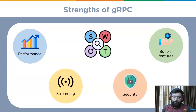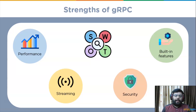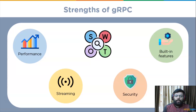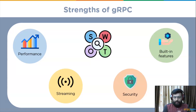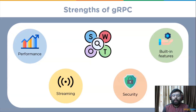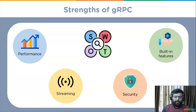Another strength is security. The use of HTTP/2 with TLS — that is end-to-end encryption — in gRPC ensures API security. gRPC encourages the use of SSL or TLS to authenticate and encrypt data exchanged between the client and server.